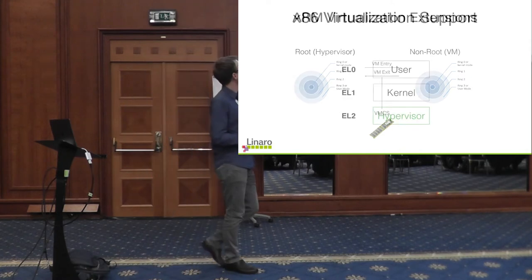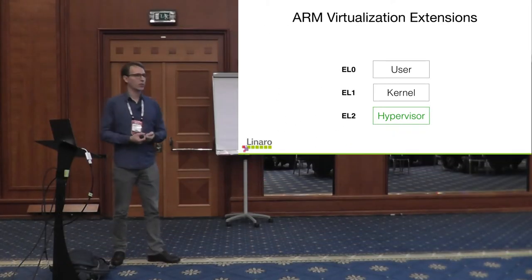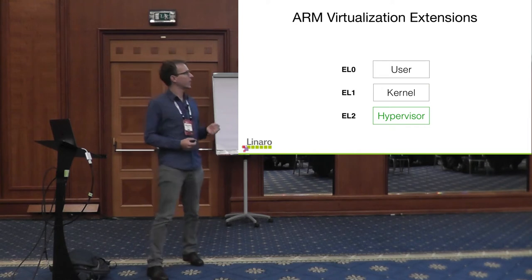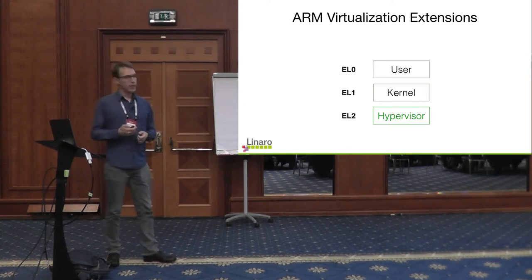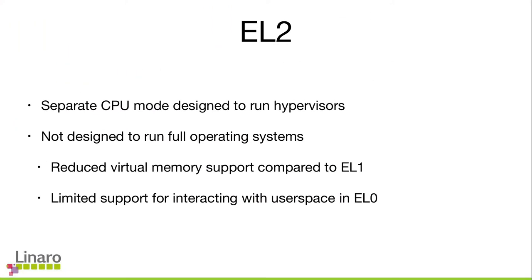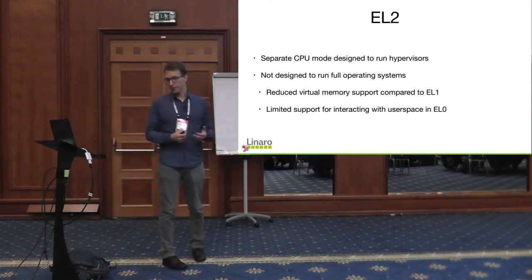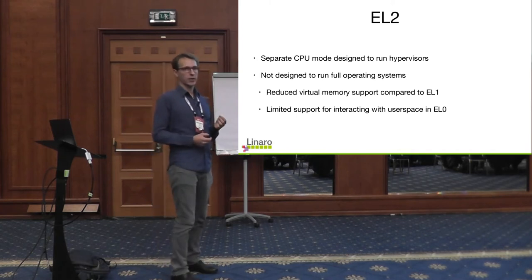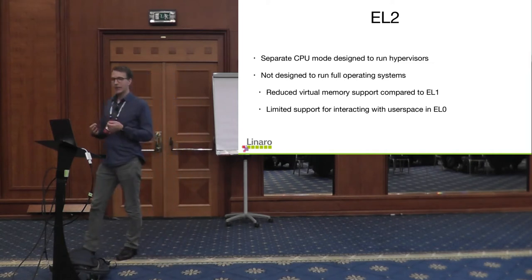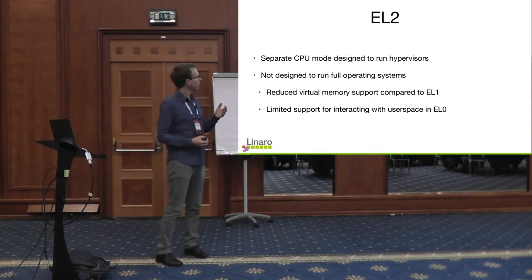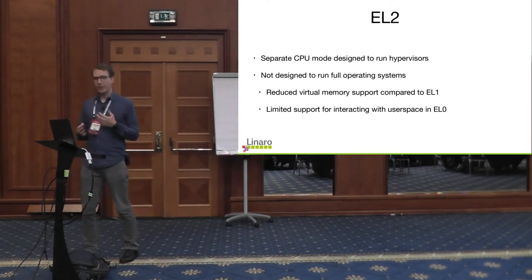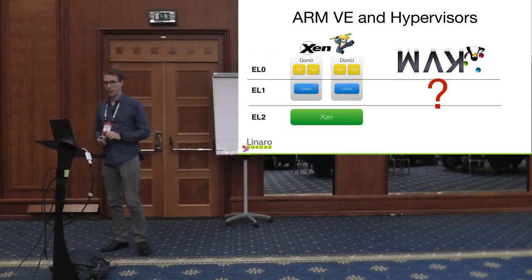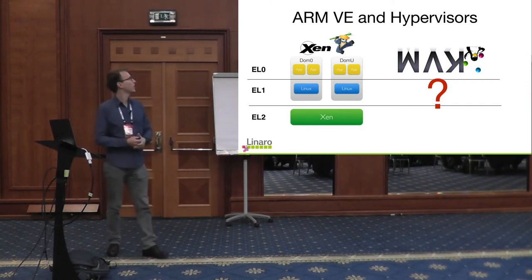ARM did something very different — they built virtualization support into their protection mechanism. The basic ARM protection mechanism has EL0 for user space and EL1 for the kernel. The ARM virtualization extensions add EL2, not orthogonal to CPU modes but part of the scheme, specifically designed to run hypervisors and not full operating systems. It has less features than EL1, reduced virtual memory support, and limited support for interacting with user space in EL0. This works well for a type 1 hypervisor like Xen.